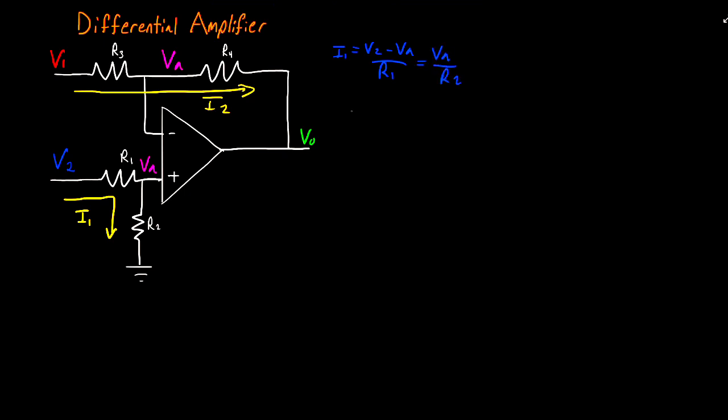Now we can move on to R3 and R4. And I can write that I2 is equal to V1 minus VA divided by R3. And the same current is going to be equal to VA minus VO divided by R4.